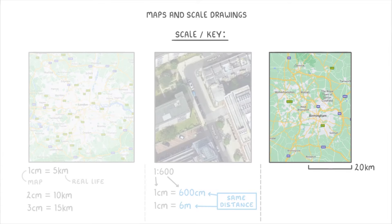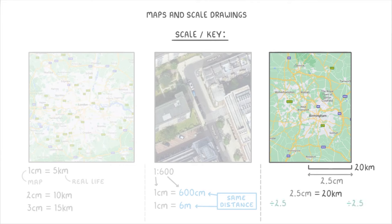This last type is the trickiest of the three, but just means that this distance here represents 20 kilometres. So what we normally do is measure the line with a ruler, which in this case would be 2.5 centimetres, and then we know that every 2.5 centimetres represents 20 kilometres, which is a much easier scale to use. And if you wanted, you could make it even easier by dividing both sides by 2.5, to find that 1 centimetre represents 8 kilometres.